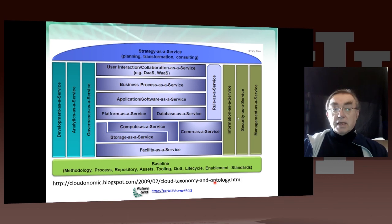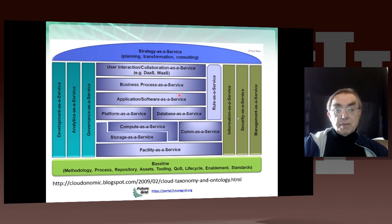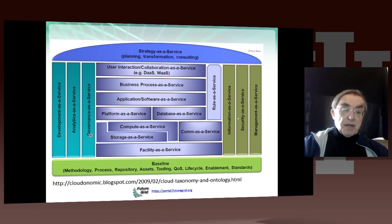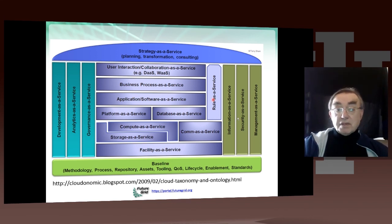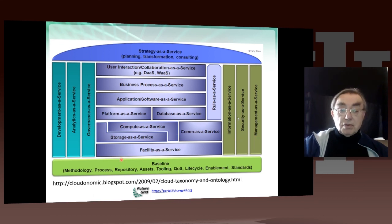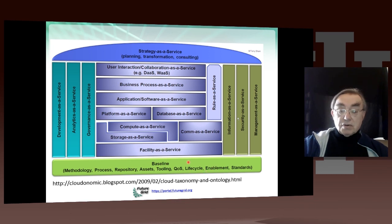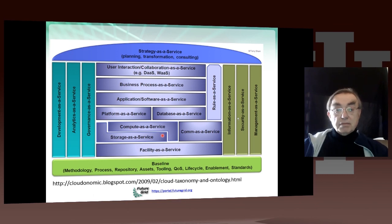Here we have another nice layered diagram with a few more layers. We have strategy as a service at the top for system makers, then software as a service designed for business people, business processes as a service, and collaboration as a service. Platform as a service includes database as a service, along with governance and analytics. Whether you make something a vertical or horizontal layer, the ordering is not always obvious. Information, security, management, development, and governance are all critical. Enabling everything are methodology, process, repository, tooling, quality of service, and life cycle — all brought together with standards to build a modern cloud system.